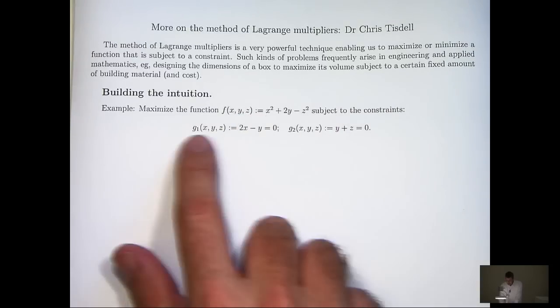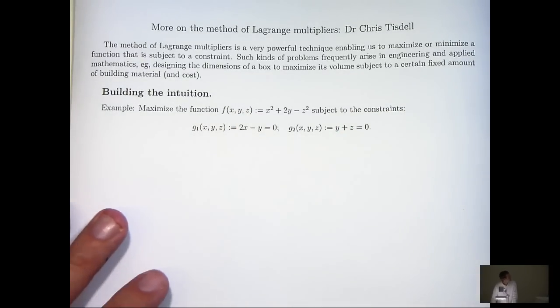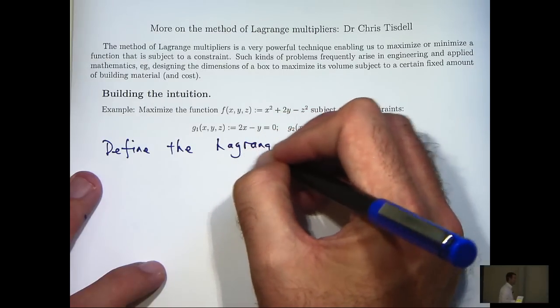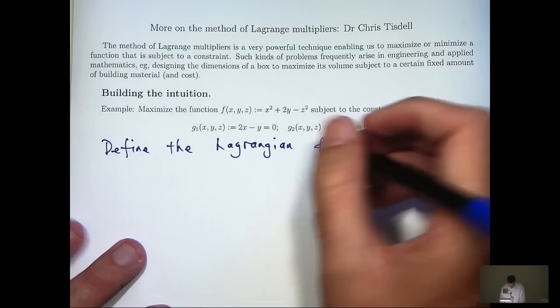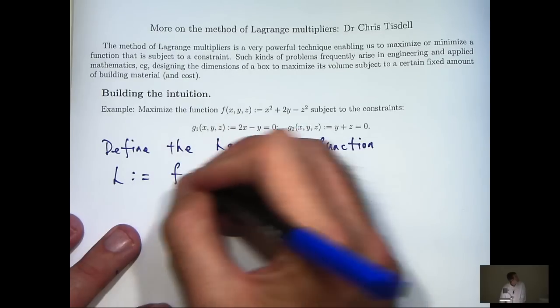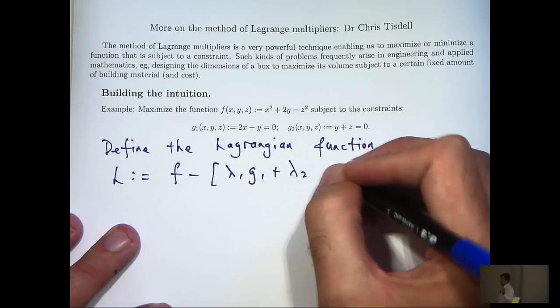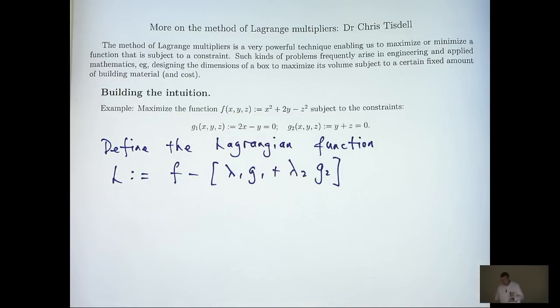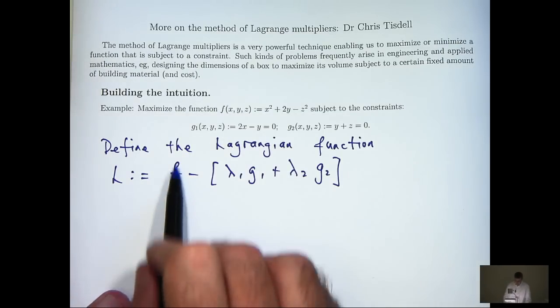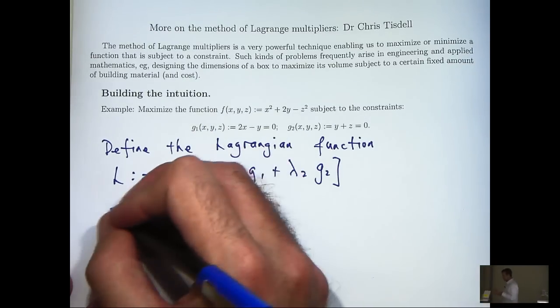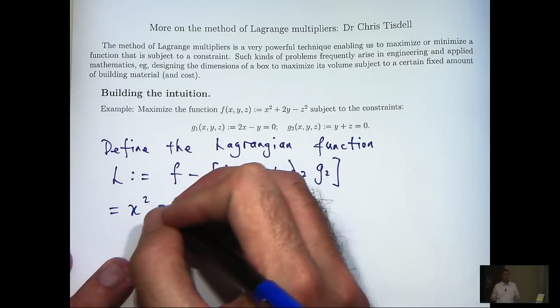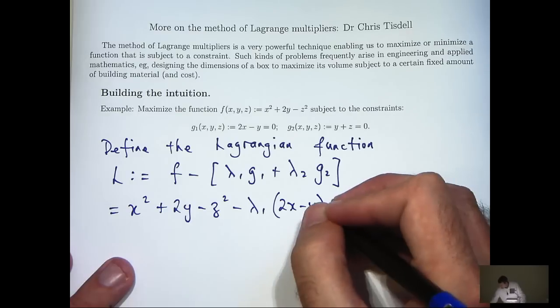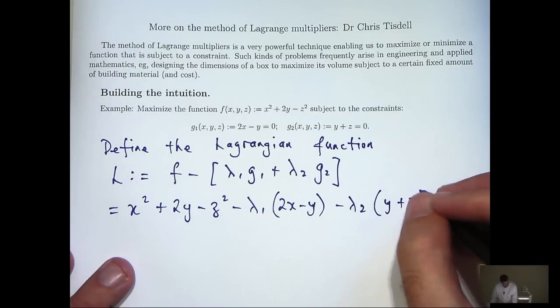So we're asked to maximize this function subject to two constraints. So we're going to define the so-called Lagrangian function, which we denote by L. And it's defined in the following way. The lambda 1 and the lambda 2 are the so-called Lagrange multipliers for this problem. Now, they're just numbers. So if f and g1 and g2 are defined in the above way, let's actually write them out in full.